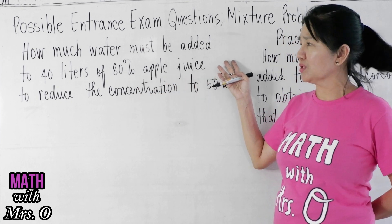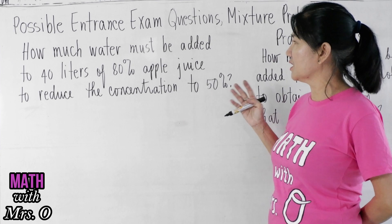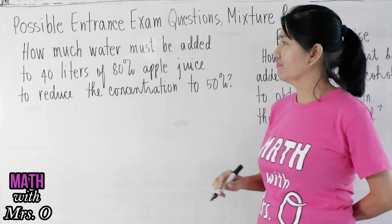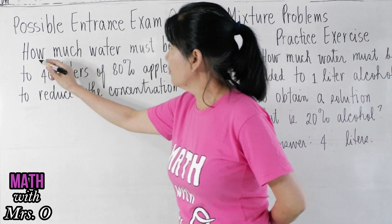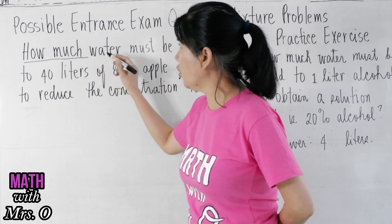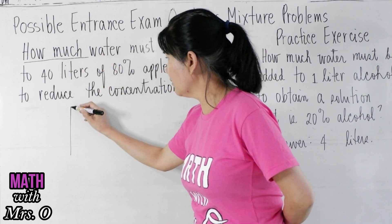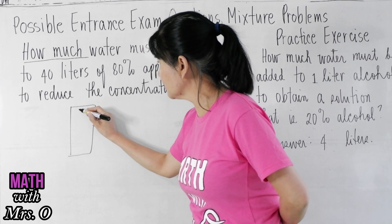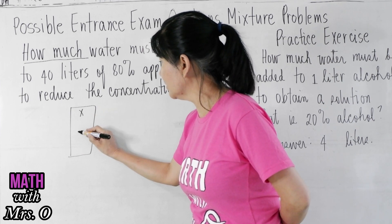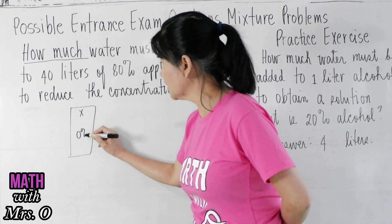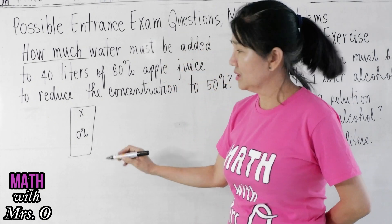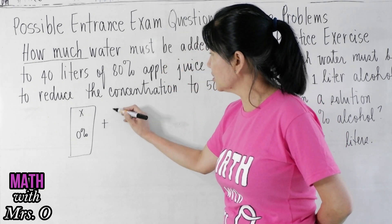Okay, so when you say how much water, we have here how much, so that is x. Water is 0% apple juice must be added. So you add to what? You add to 40 liters. So this is 40 liters of 80% apple juice, so this is 80%.